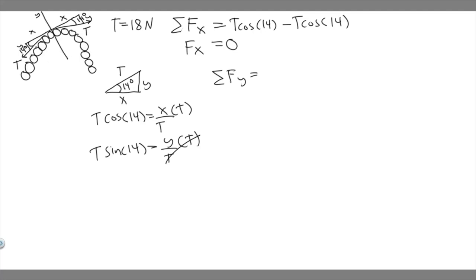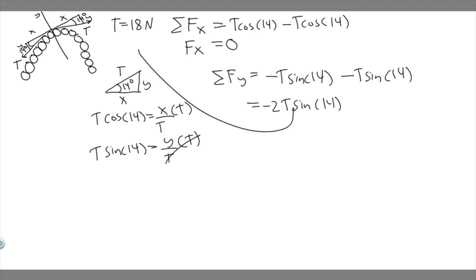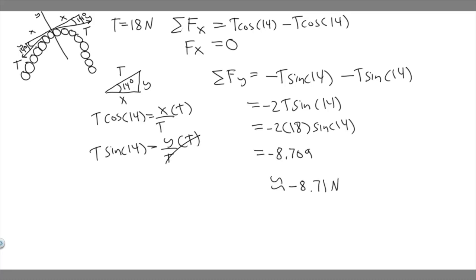Since up is positive and down is negative, it's going to be minus t·sin(14) for the first one, and minus t·sin(14) for the other one, giving us minus 2t times the sine of 14. We know t equals 18, so we plug in: minus 2 times 18 times sine of 14. Plugging this into the calculator, the sum of the forces in the y direction equals minus 8.71 newtons.